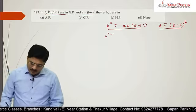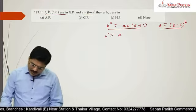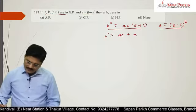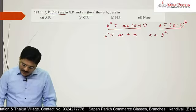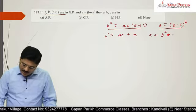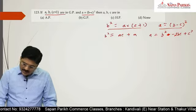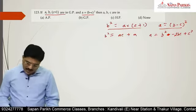So b² is equal to ac plus a. If I expand this, a is equal to b² minus 2bc plus c². This I got.